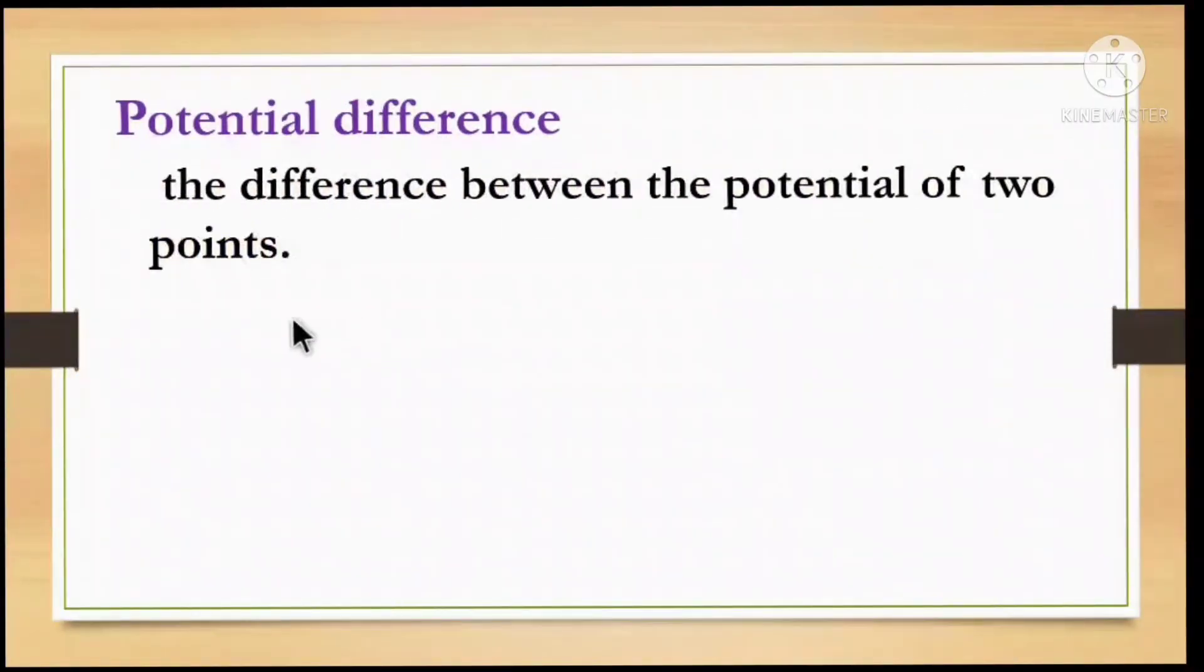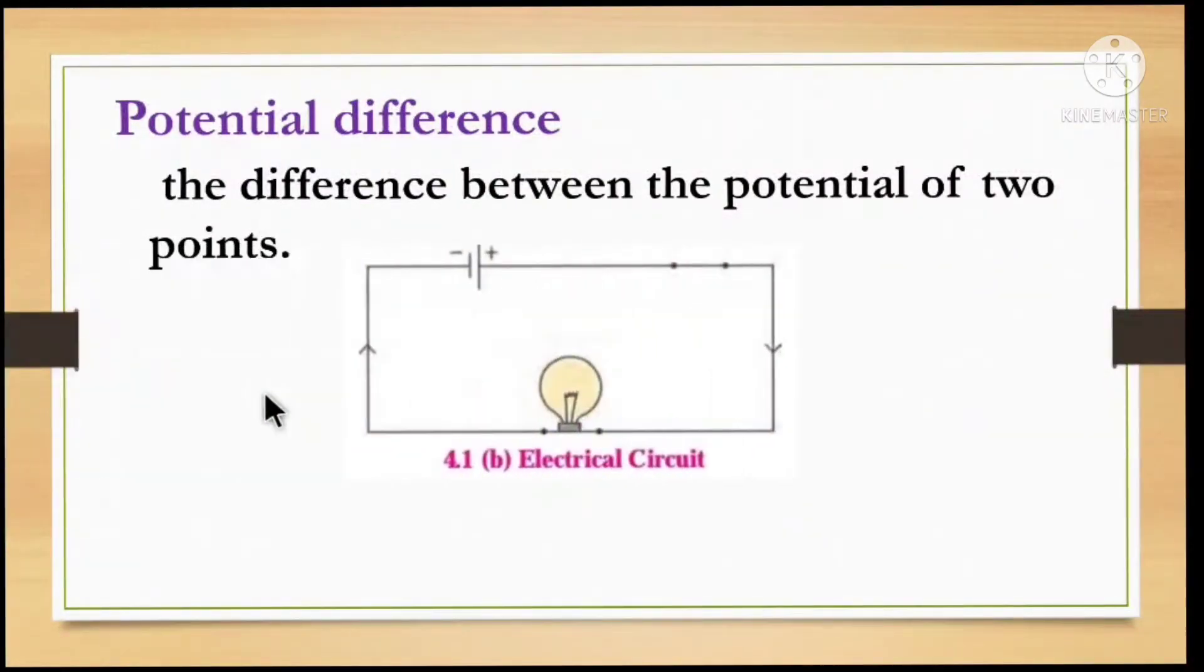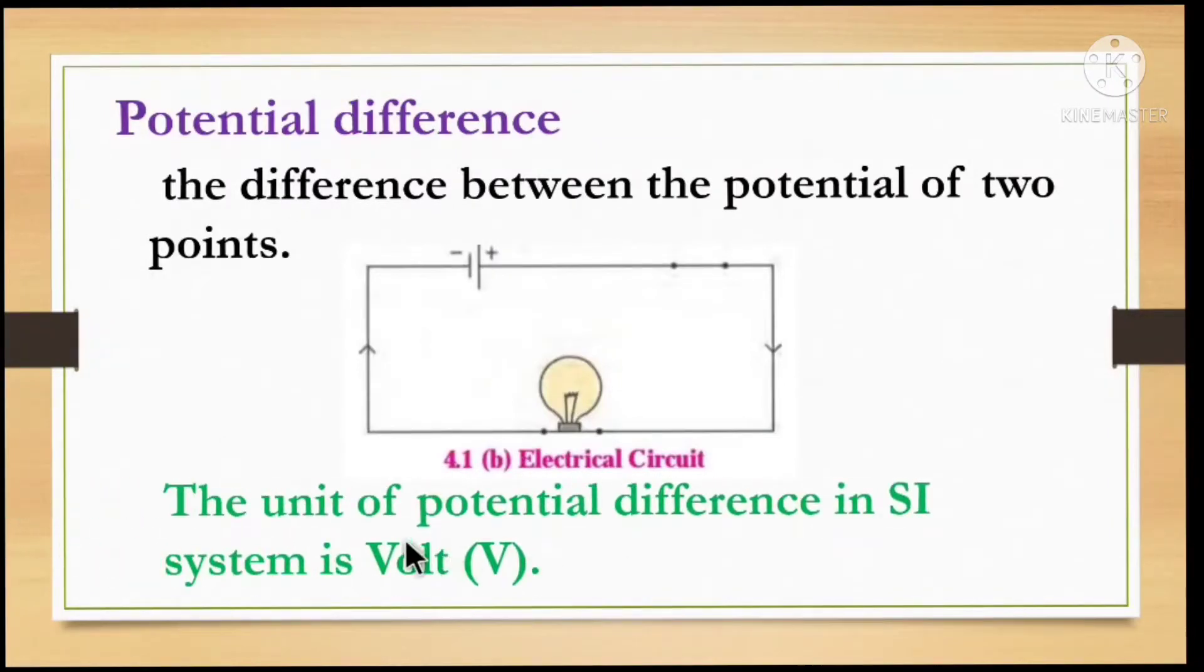Potential difference. The difference between the potential of two points. In an electrical circuit with a cell, positive charge flows from positive to negative terminal. The unit of potential difference in the SI system is Volt.